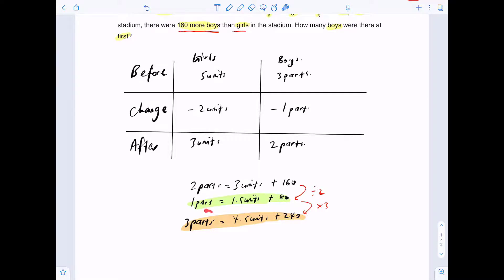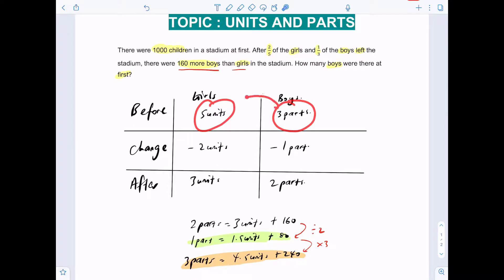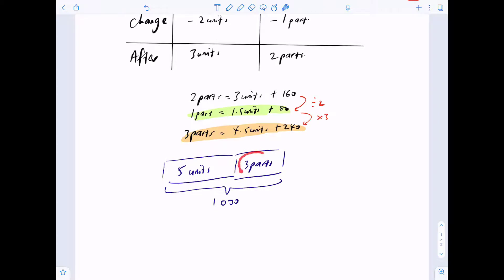I will take this information and put it into the before case. Five units plus three parts is the total number of children at the start, which is 1,000. To help you understand this better, five units and three parts will be 1,000 children. These three parts we will replace with four and a half units and 240.